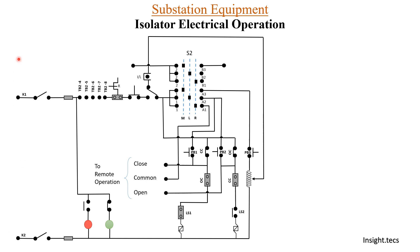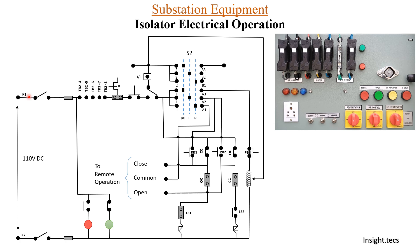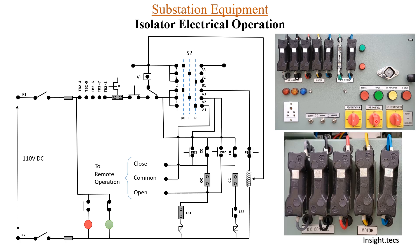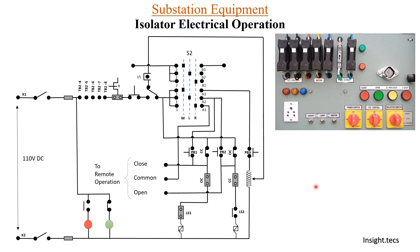Now we look at the isolator control panel. Inside the control panel we have a DC control switch. When the DC control switch is turned on, power moves towards the DC control fuse.